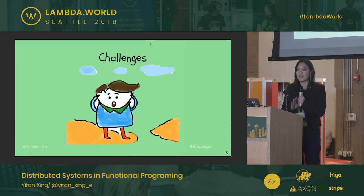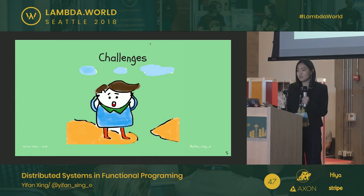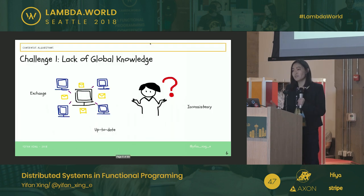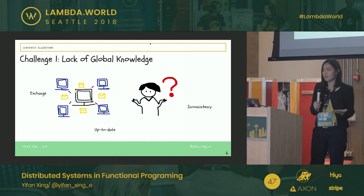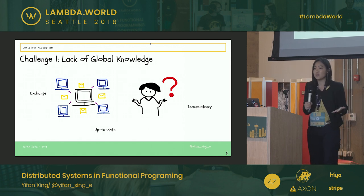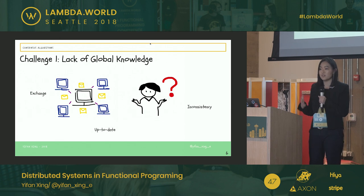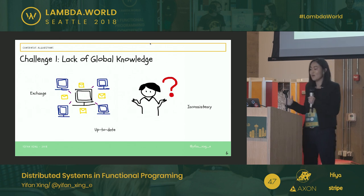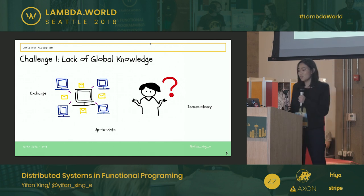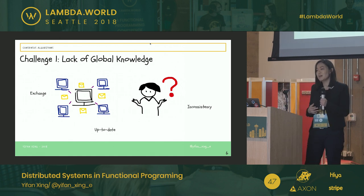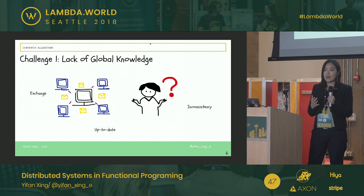Distributed systems are great — they are powerful and help us solve a lot of problems — but there are also challenges. None of the machines really have global knowledge of what's going on in the overall setting. As a state machine, you only know what's happening on your own machine and have knowledge of the messages you received, but you have no idea of the whole system. So how do they exchange information and how do we make sure that information is up to date?